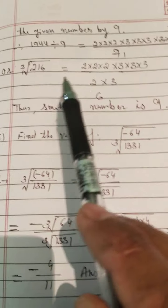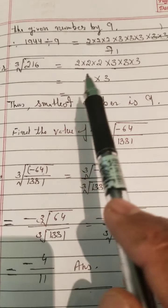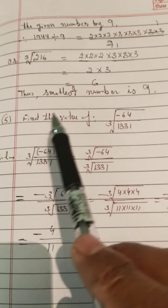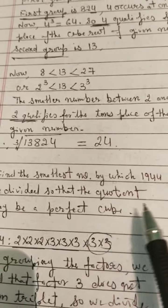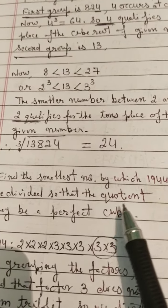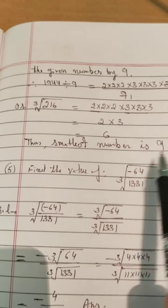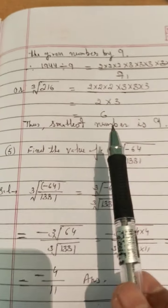If we divide 1,944 by 9, it equals 216. Cube root of 216: making triplets, we get 2 × 3 × 6 — that is, cube root equals 6. Thus the smallest number by which we divide the given number is 9. In this way we can solve this sum.